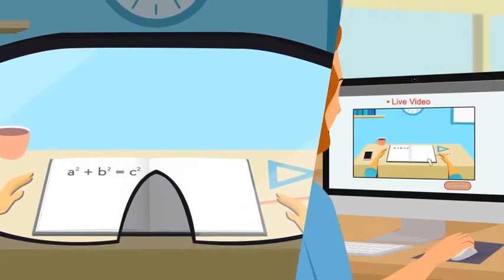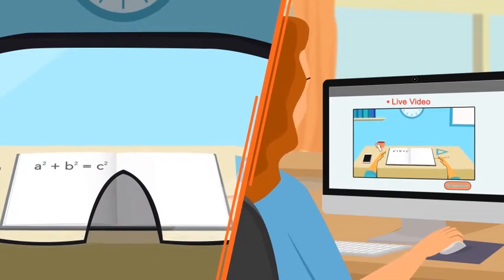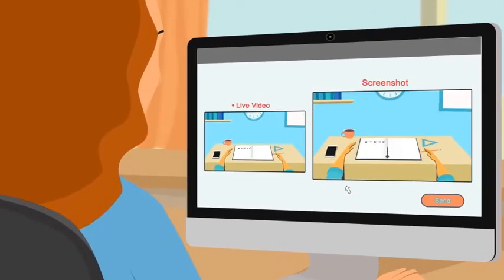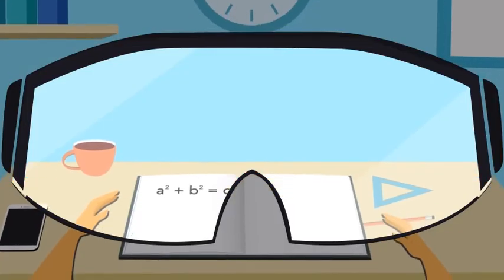a remote tutor has live point-of-view communication with the student and sees exactly what the student sees. The teacher can screenshot and send annotated AR data directly into the field of view of the student. ThirdEye uses a three-screen interface.